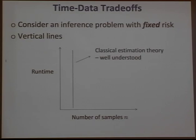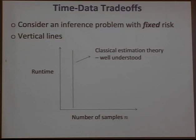Any time you have a plot attempting to understand trade-offs, the first question is: what do vertical lines and horizontal lines mean? A vertical line means: to obtain my fixed risk, what is the smallest amount of data I need, independent of computational considerations? This is relatively well understood — in many domains we have minimax risk bounds for many classes of problems.